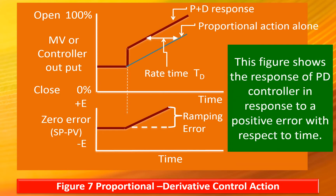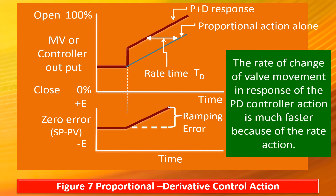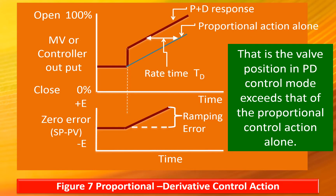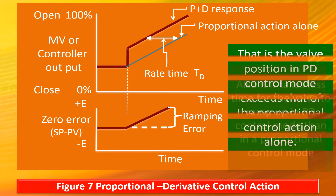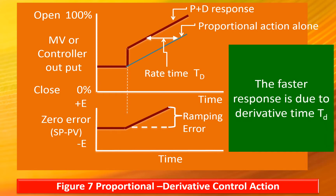This figure shows the response of a PD controller in response to a positive error with respect to time. Observe the proportional response alone — the rate of change of valve position of the control valve is slower. The rate of change of valve movement in the PD controller response is much faster because of the rate action. The valve position in PD control mode exceeds that of proportional control action alone, and it takes less time for the valve to ramp up in PD control mode. The faster response is due to the derivative time Td.